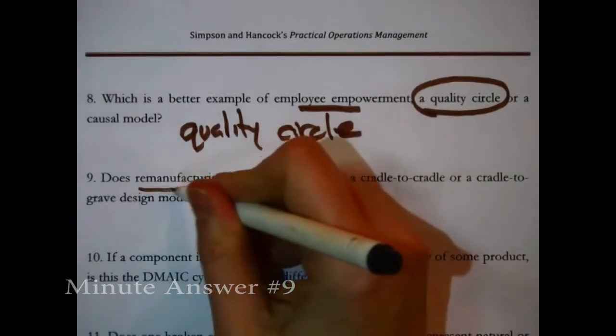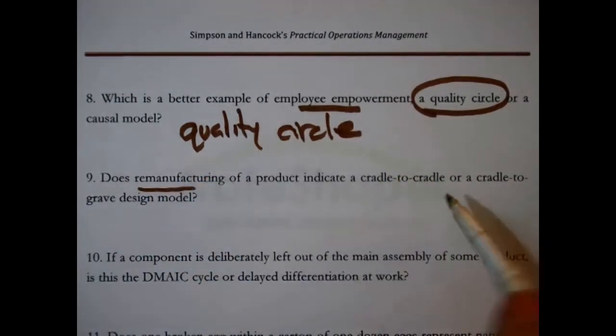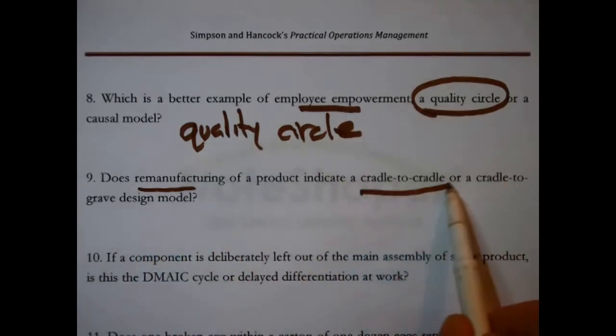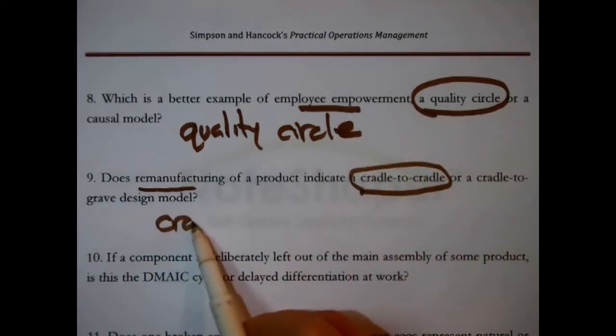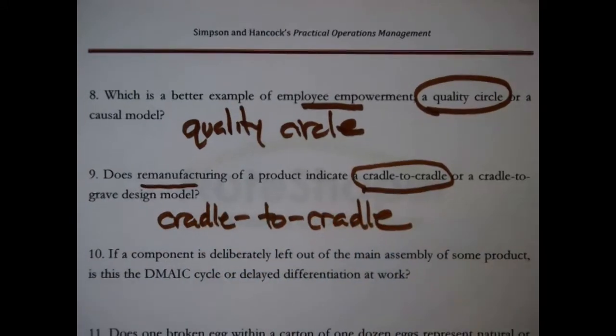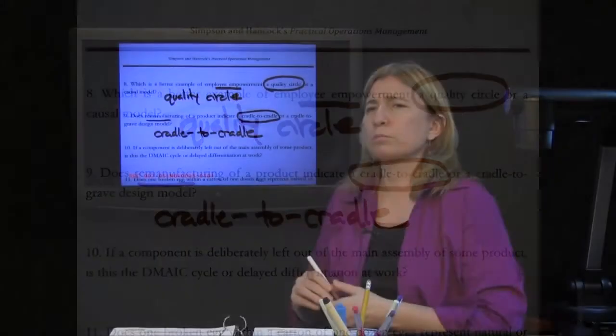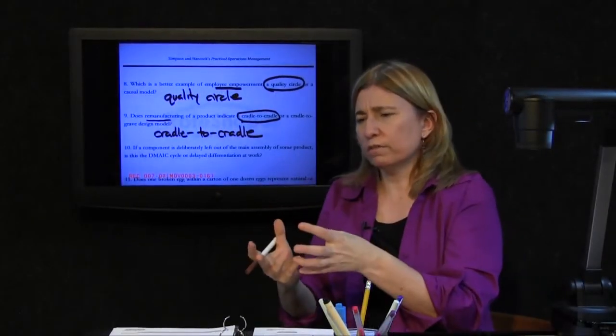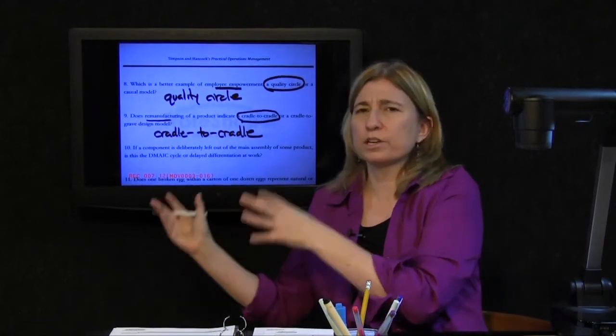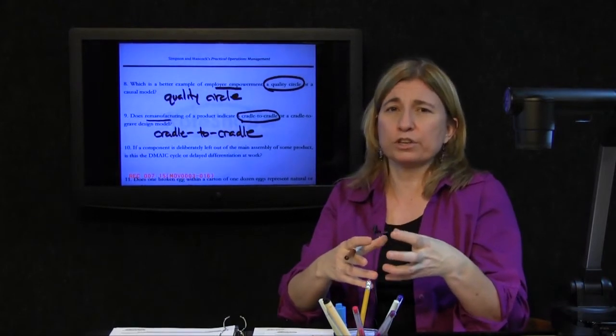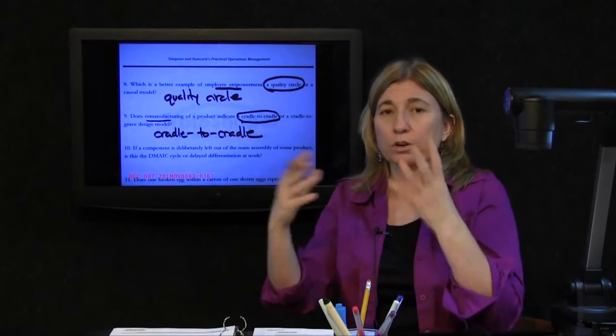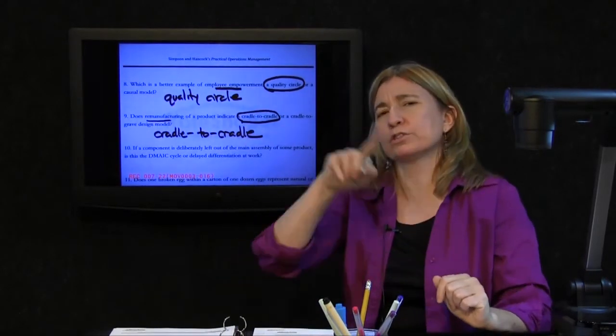Does remanufacturing of a product indicate cradle-to-cradle or cradle-to-grave design model? Answer, cradle-to-cradle. Because remanufacturing implies that there is a product, it's reached the end of its usefulness, and there is some process for drawing it back into the production, remanufacturing it into maybe not exactly the same product, but something similar and something useful. That is cradle-to-cradle.